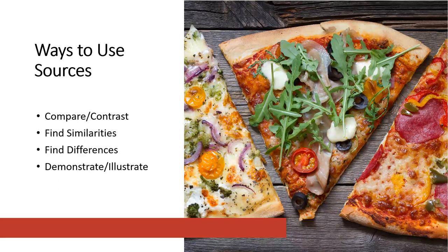Beyond the big three, there are other ways you can use sources. You can compare and contrast — using multiple sources together and explaining how they either support or argue against one another. You can find similarities, synthesizing sources to show how different pieces reflect trends or commonalities, and highlighting the general trend of the research. You can also discuss differences, showing how authors, creators, and researchers think differently or have found research with different results — this is important because it helps show all sides of an issue. And finally, you can demonstrate or illustrate, using a source or group of sources to show how they support a point or position you are trying to make, using them as specific examples to highlight your argument.